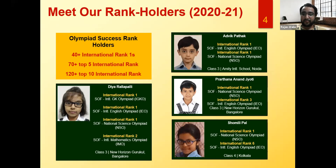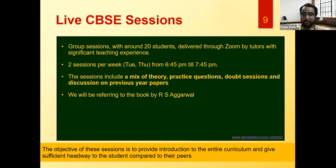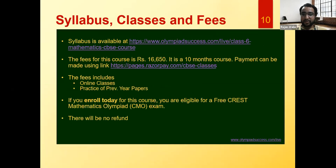For session 2021-22 results: 40+ international ranks, 170+ top 5 international ranks, and 120+ top 10 international ranks in various Olympiad exams. About this course: there will be 20 students, classes on Zoom, two sessions per week on Tuesday and Thursday from 6:45 to 7:45 PM. Sessions include MCQ practice, doubt sessions, and previous year papers, referring to RS Agarwal. The fee is ₹16,650 for 10 months. If you enroll today, you get a free CREST Olympiad exam.